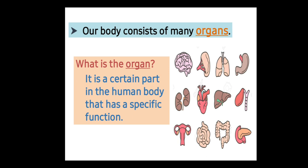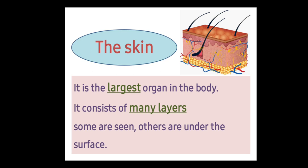What is the meaning of organ? An organ is a certain part in the human body that has a specific function. What is the meaning of specific function? For example, our eyes can see, our nose can smell, our ears can hear. That is the meaning of a specific function.